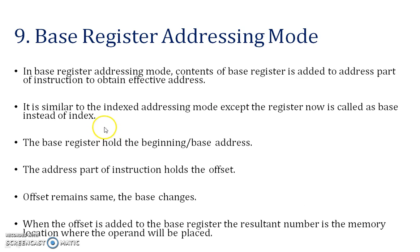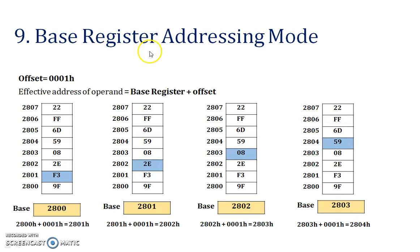Next — base register addressing mode. The content of the base register is added to the address part of the instruction to obtain the effective address. The equation is: Effective Address = base register + offset. In the example, the base register is 2800 and the offset value is 0001, so 2800 + 0001 = 2801. Therefore 2801 is our effective address and F3 is our data.